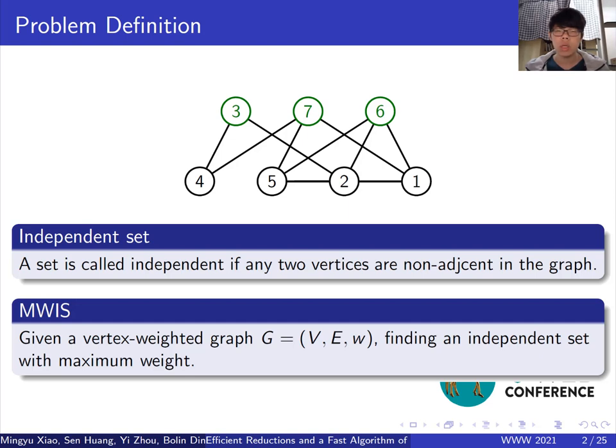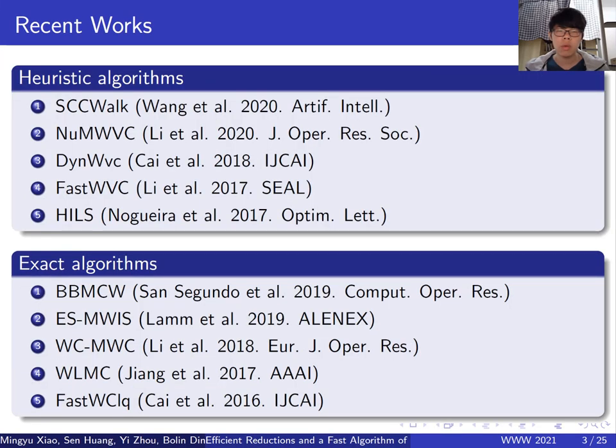The problem we studied in this paper is to find an independent set with maximum weight. For solving this problem, a considerable number of algorithms have been proposed. Here we show some recent works. They can be distinguished into heuristic algorithms and exact algorithms.